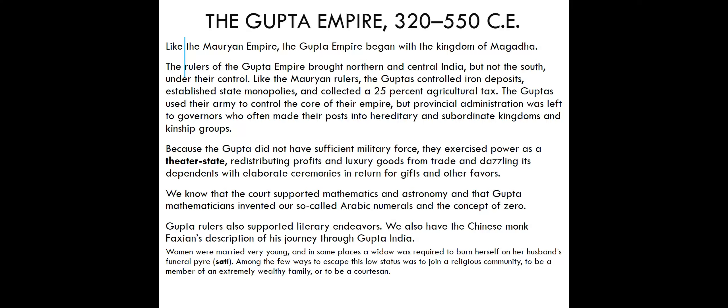We don't have a lot of archaeological data from the Gupta period, but we know the court supported mathematics and astronomy. Gupta mathematicians invented what would later be called Arabic numerals as well as the concept of zero. Gupta rulers also supported literary endeavors. The Chinese monk Faxian traveled through the Gupta Empire, providing much of the historical record we have. Historians also believe the first vaccine for smallpox was actually developed in the Gupta period.